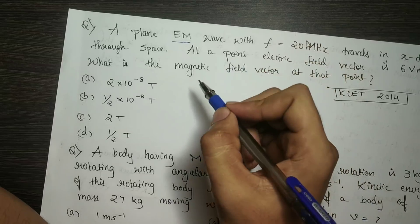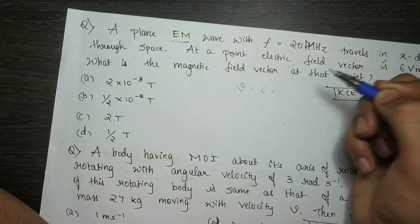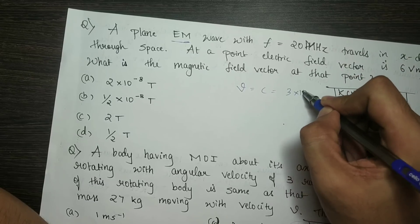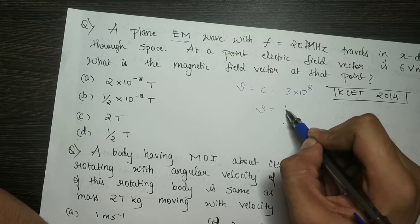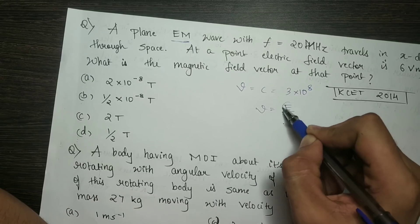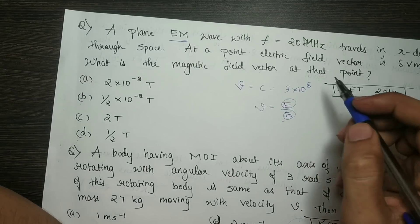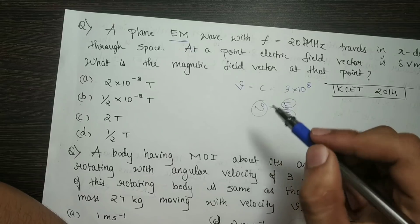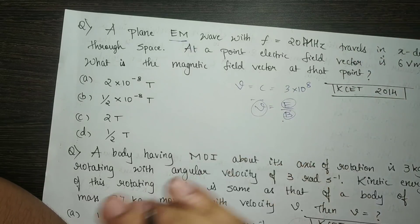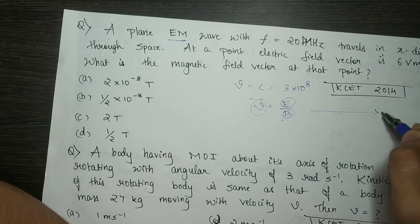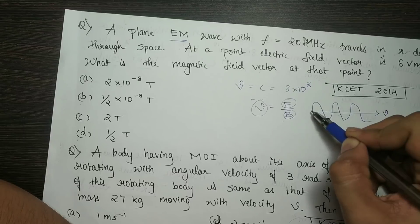The EM wave is the electromagnetic wave. All EM waves travel at the speed V equal to C equal to 3 × 10⁸. V is the direction of propagation. When we solve the electromagnetic wave, the velocity is here, the electric field is here, and the magnetic field is here.